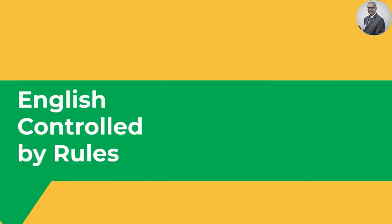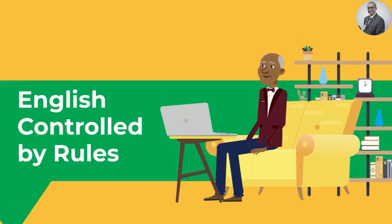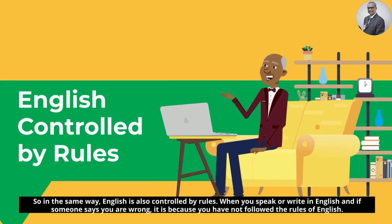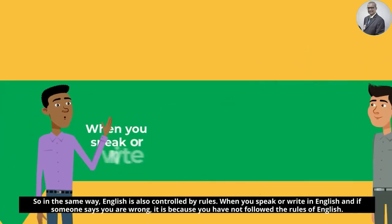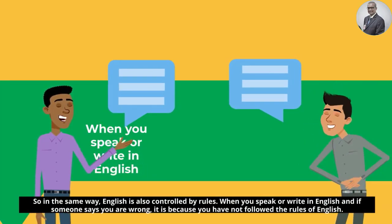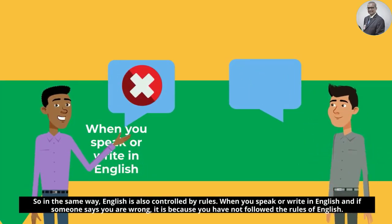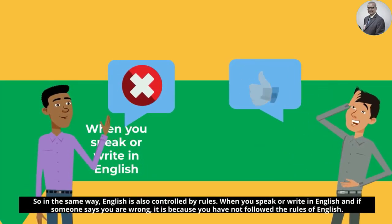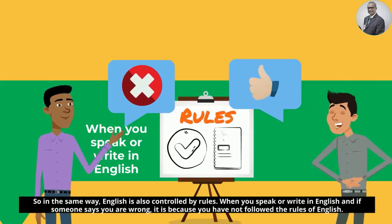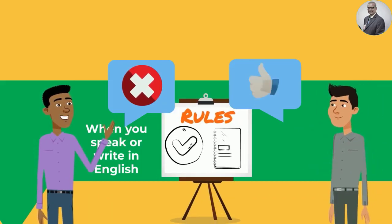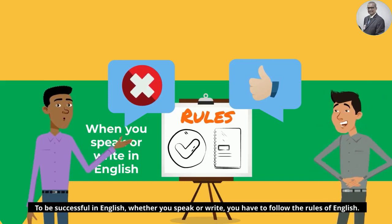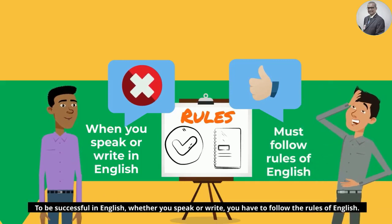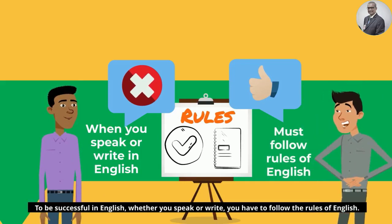English is controlled by rules. So in the same way, English is also controlled by rules. When you speak or write in English and if someone says you are wrong, it is because you have not followed the rules of English. To be successful in English, whether you speak or write, you have to follow the rules of English.